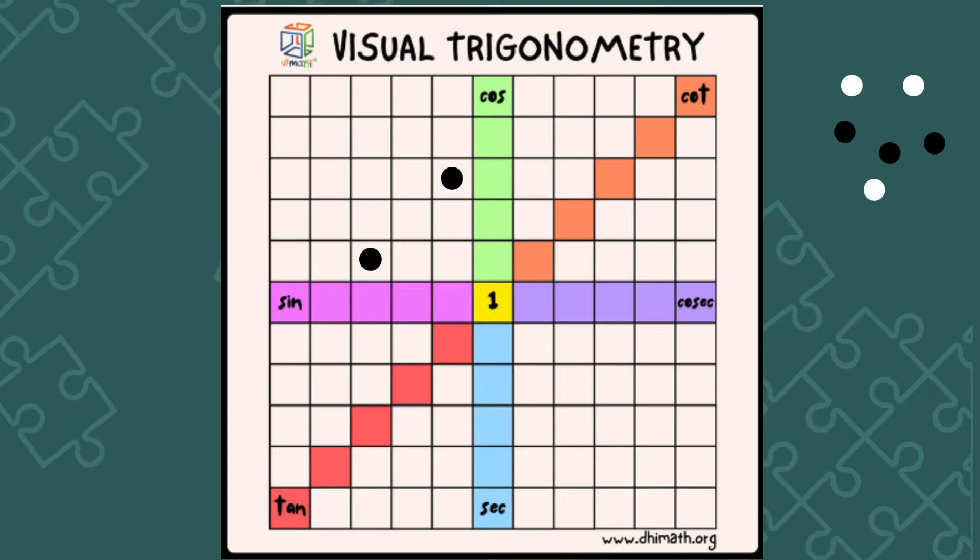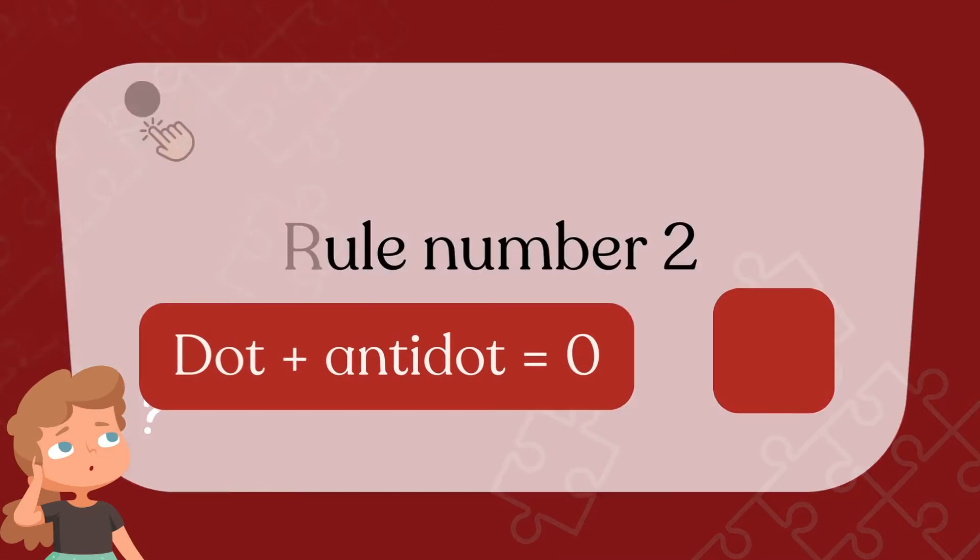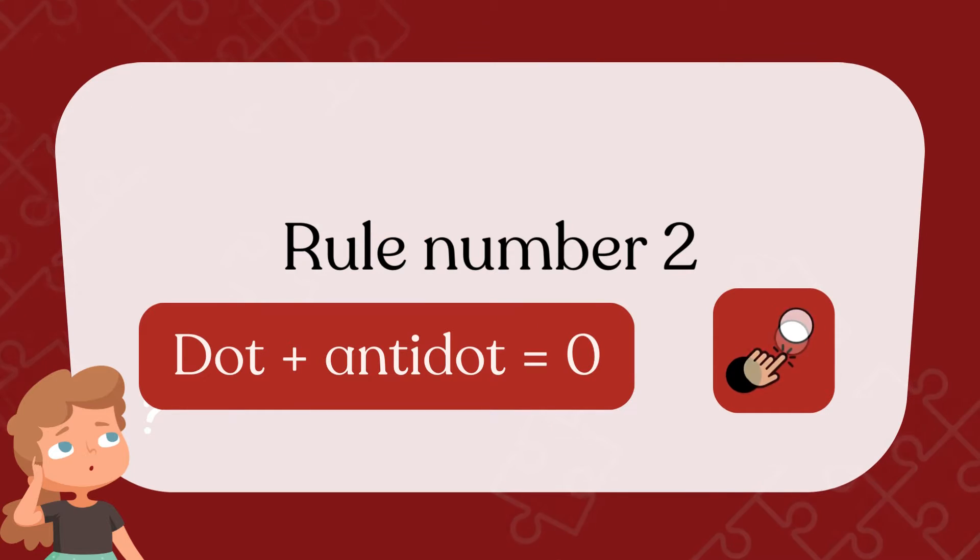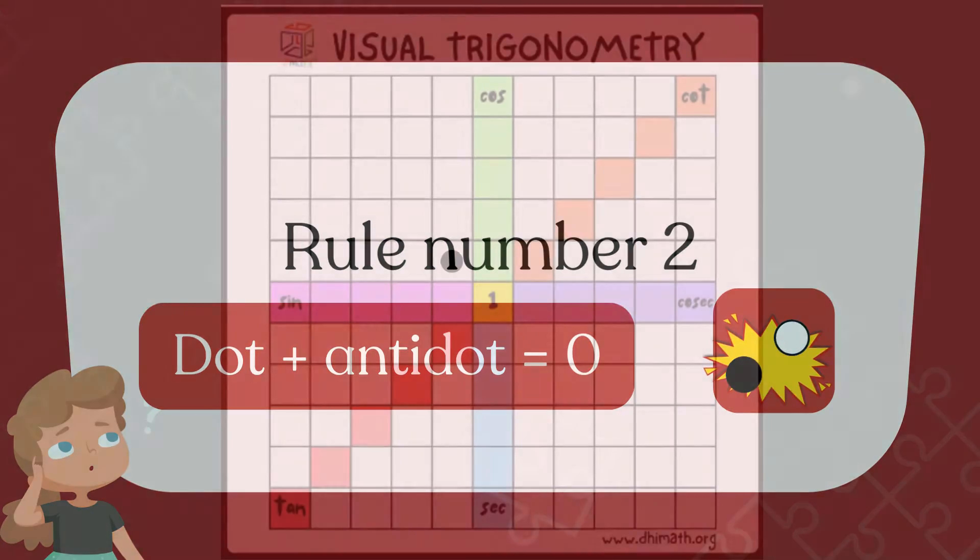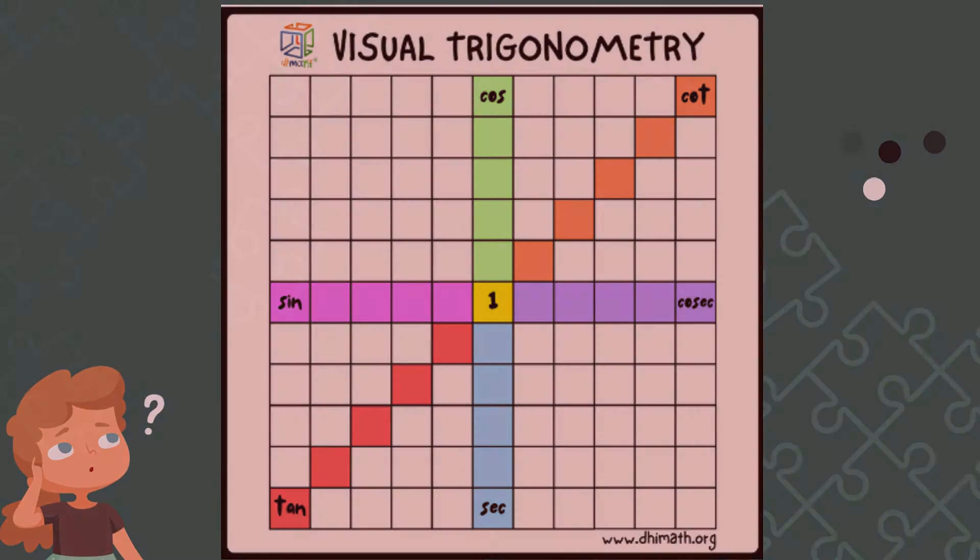Rule number two: the dot and antidot pair get vanished if they come together in one box. The interesting part is that you can choose to explode or do its reverse action on any of the dots and make your own expression. Enough talking, let's prove an identity.